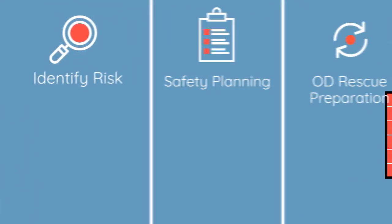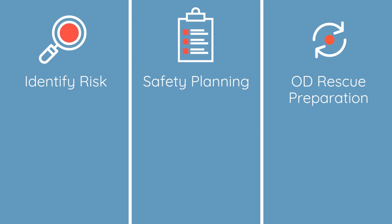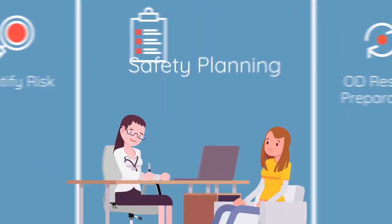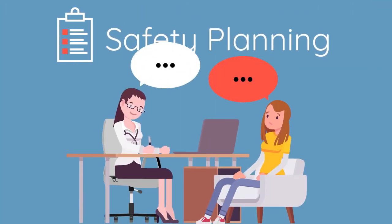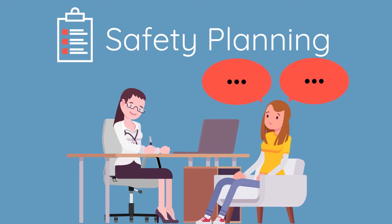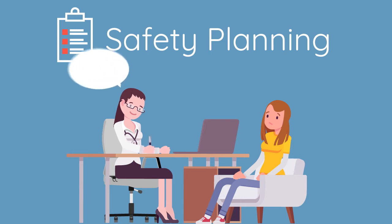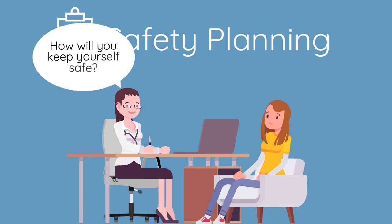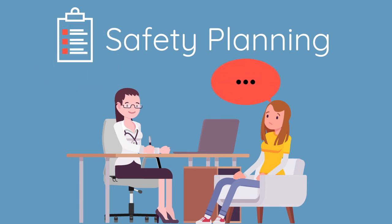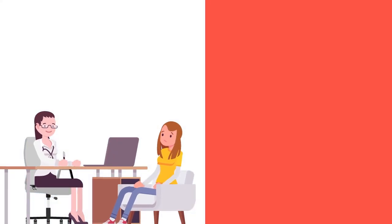Developing a safety plan — the second key strategy — addresses the identified overdose risk factors. Safety planning is an active and collaborative process with the patient, which is updated and modified as circumstances or risk factors change. An example of how to begin safety planning is to ask the patient: how will you keep yourself safe from an overdose?